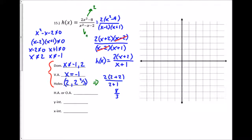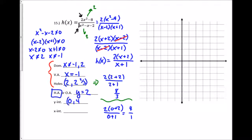For the asymptote type I compare degrees: numerator is degree 2 (after expanding 2(x+2) it's still degree 1, but the original numerator 2(x²-4) is degree 2) and denominator is degree 2 — same degrees, so it's horizontal. y equals leading coefficients: 2 divided by 1 equals 2, so y=2. Y-intercept: plug x=0 into simplified form: 2(0+2)/(0+1) = 4, so (0,4). X-intercept: set numerator equal to 0, x+2=0 gives x= negative 2, so (negative 2, 0).